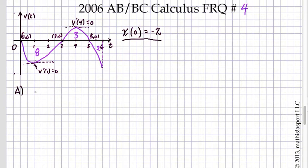So we know, first of all, that x of 0 is negative 2. That's given.